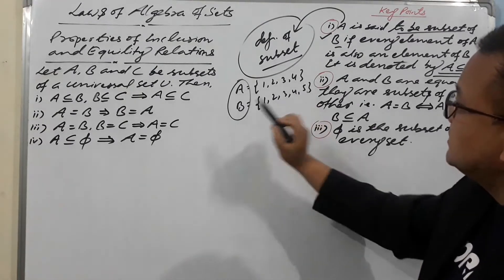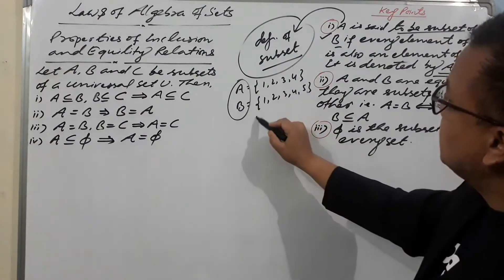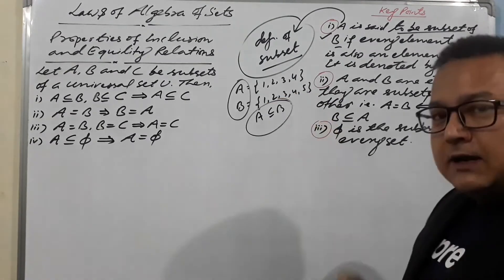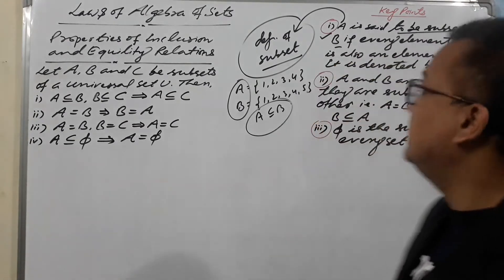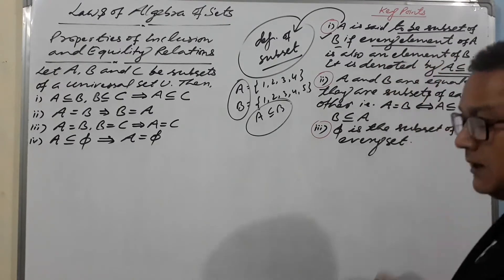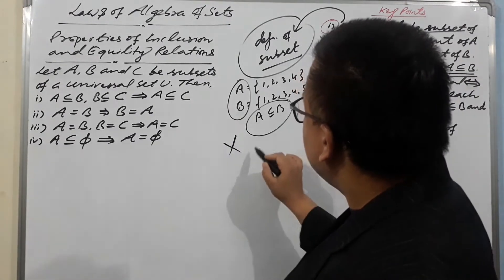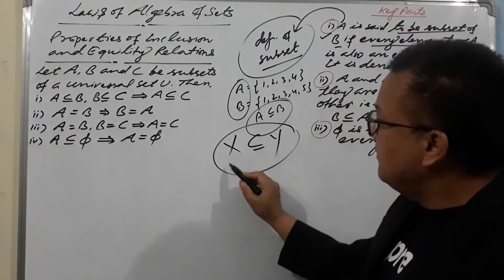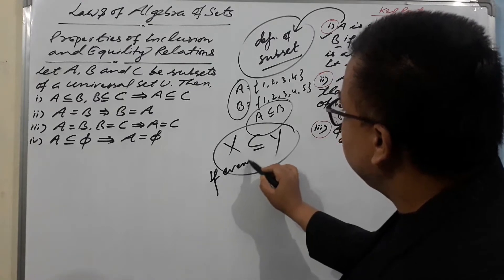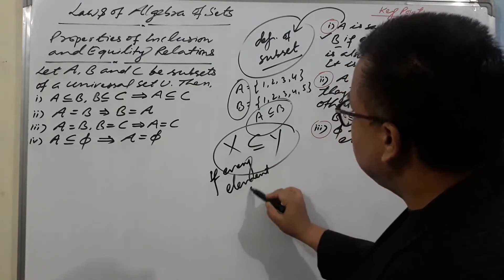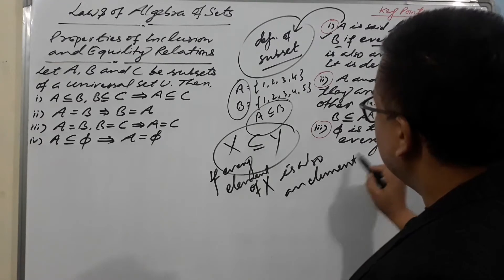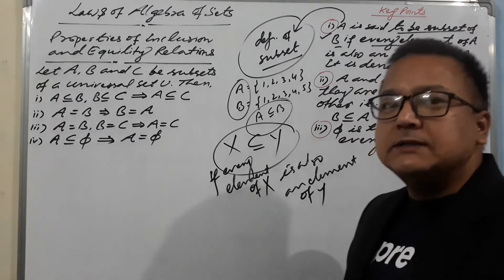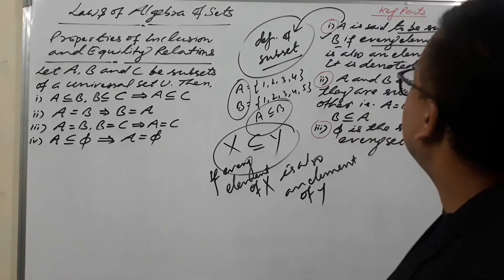Since 1, 2, 3, and 4 are all elements of B, we can say A is a subset of B. So now you understand the meaning of subset — when we can say one set is the subset of another set. In general, X is a subset of Y if every element of X is also an element of Y.